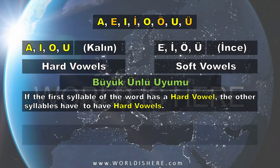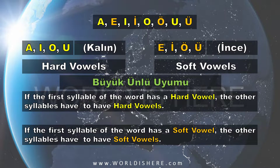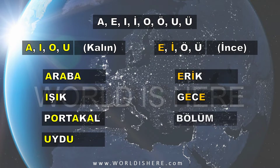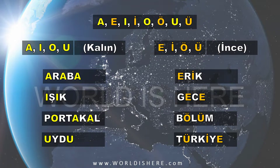After we learned hard and soft vowels, we studied büyük ünlü uyumu — major vowel harmony. What we learned is that if the first syllable of a word has a hard vowel, then the other syllables also have to have hard vowels; if it's soft, the others are soft. There are exceptions, but that is the rule. For example, araba: the first vowel is A which is kalın, and the others are also A — so büyük ünlü uyumu is working here.